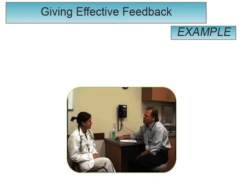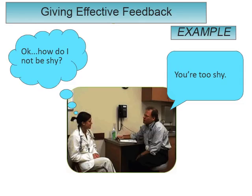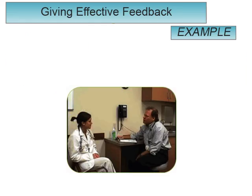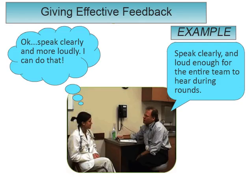Let's explore delivering feedback to a learner who is shy. You could outright tell her that she's shy, and while this is giving her feedback, it's not exactly specific. The result is that the learner understands that she's shy, but she doesn't know what to do to correct it. Instead, we worded it so that she needs to speak clearly and loud enough for the entire team to hear during rounds. As a consequence, the learner now understands the specific behaviors she needs to modify to meet the standard expected of her.